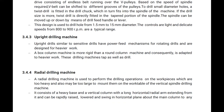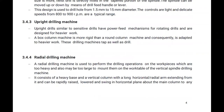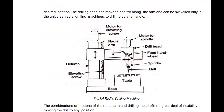The next drilling machine is the radial drilling machine. The radial drilling machine is used to perform drilling operations on workpieces which are too heavy and too large to mount on the work table of a vertical spindle drilling machine. It consists of a heavy base and vertical column with a long horizontal or radial arm extending from it, which can be rapidly raised, lowered, and swung in a horizontal plane to any desired location.